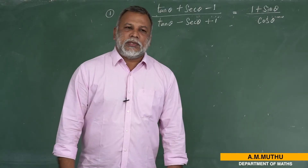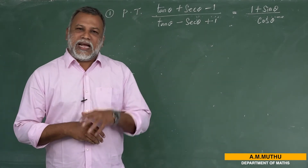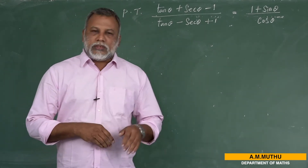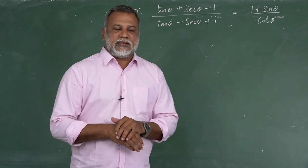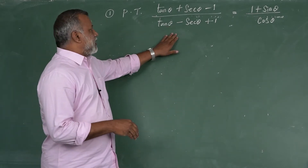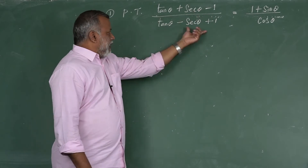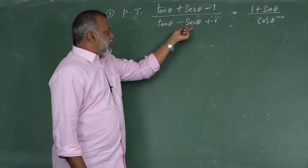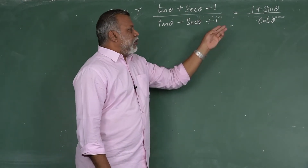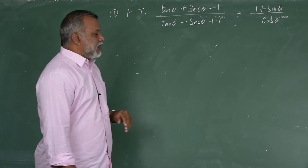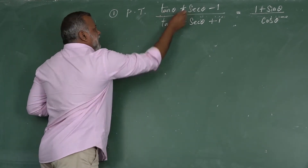Good morning students. We already worked out some problems based on identities; today also we are going to work some problems related to identities. The question is: tan θ + sec θ - 1 divided by tan θ - sec θ + 1, and the RHS to prove is 1 + sin θ divided by cos θ. The functions given are tan and secant on both sides.